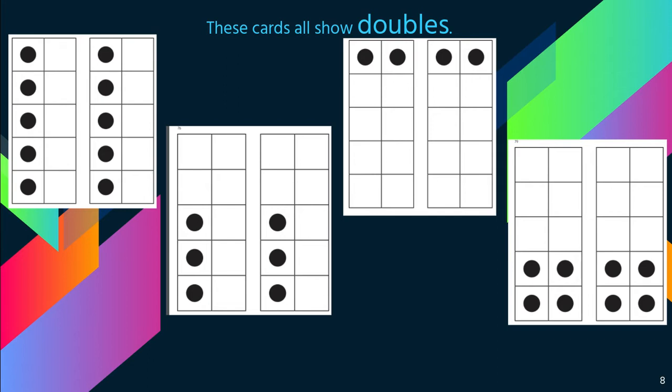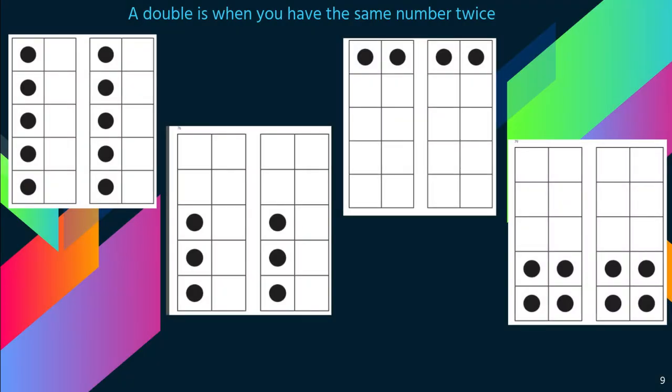These cards all show doubles. Can you figure out what double means? Double means the same. So it's showing the same amount on each of the 10 frames. And remember, a double 10 frame is two 10 frames. A double is when you have the same number twice.